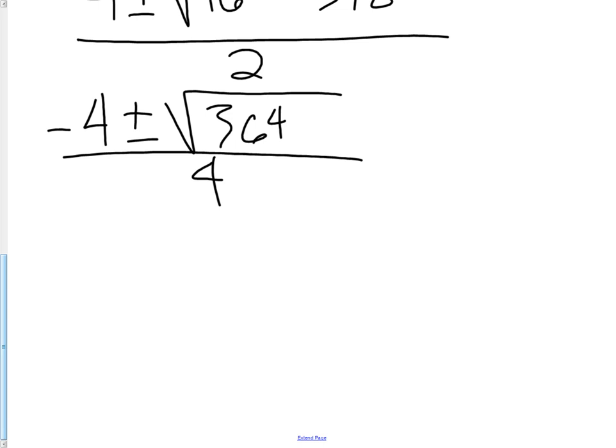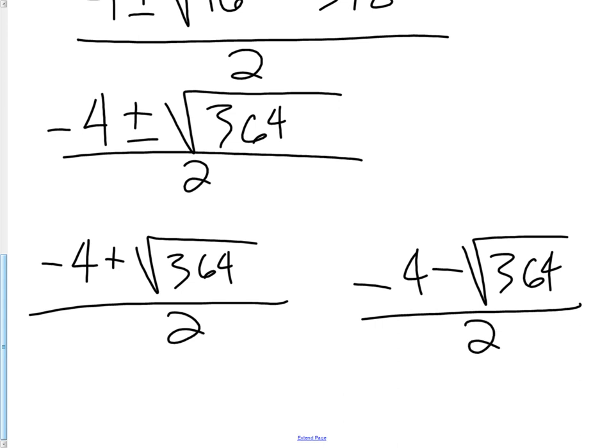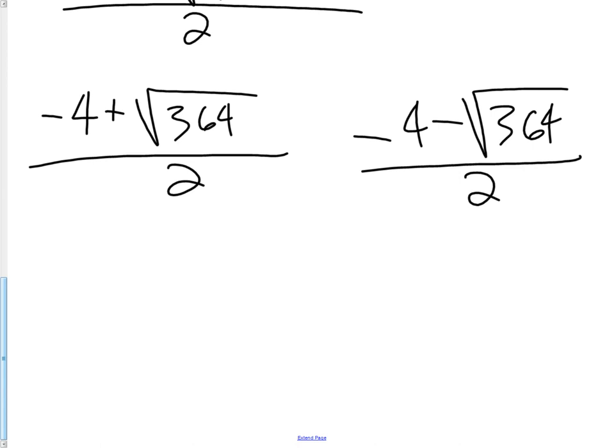Now it's time to use our calculator. We have negative 4 plus the square root of 364 over 2, and we have negative 4 minus the square root of 364 over 2. I think I changed that 2 to a 4. I better change that back. I apologize. Hopefully you caught that. I should have a 2 down here. There we go. Now just get out your calculator and do your calculations on that. See what you get.